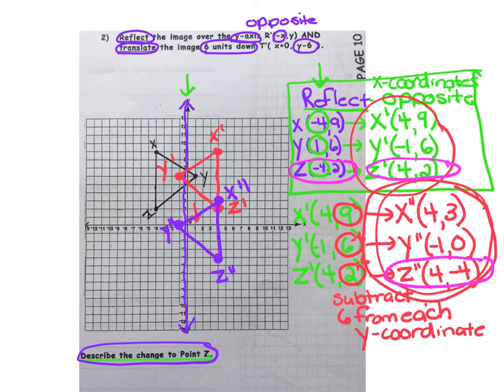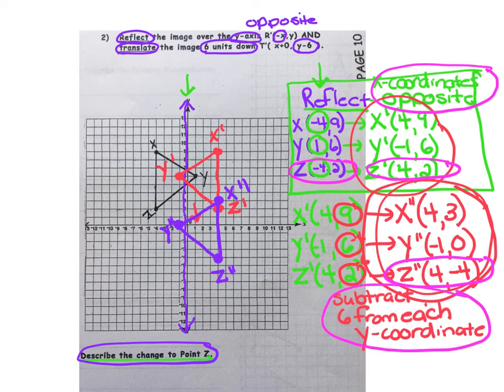We're going to talk about how the x-coordinate changed to its opposite as we flipped it over the y-axis. And as we slid the image downward, we subtract 6 from each y-coordinate.